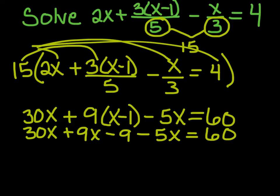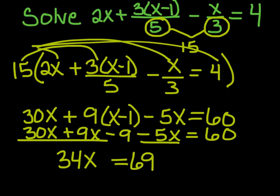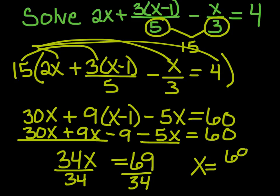So the 30x, the 9x, and then the minus 5x gives me 34x. And then I'm going to add 9 to both sides equals 69. Then we divide both sides by 34, and we will have an x value of 69 over 34, which actually does not reduce.